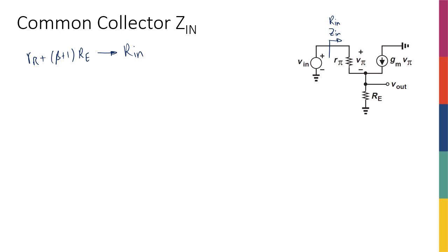One interesting thing is that I didn't really need to write all those equations in the last slide. I could have found the gain much easier using this trick. If this is V_in, I've learned that I can bring any resistor in the emitter to the base and make it in series with the base resistors if I multiply it by (beta + 1).